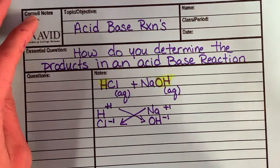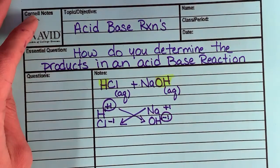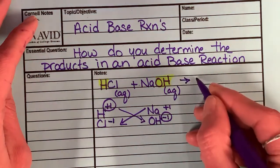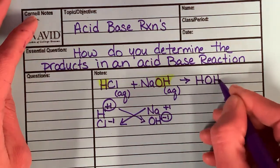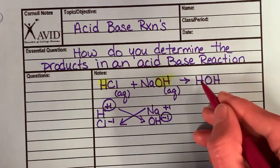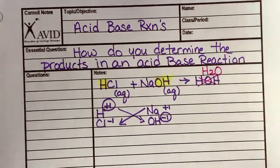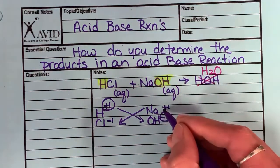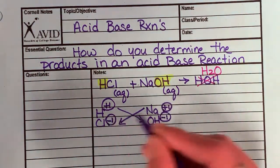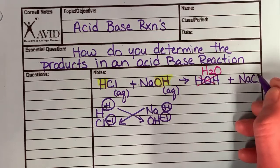Now, in this case, here's what happens. My H and my OH come together. Plus one, minus one. I just stick them together. And I could write it as HOH. However, you're never actually going to see this written as HOH. This is going to be written as H2O. Na is a plus one. Cl is a minus one. So again, they cancel out. So I can just stick these together.